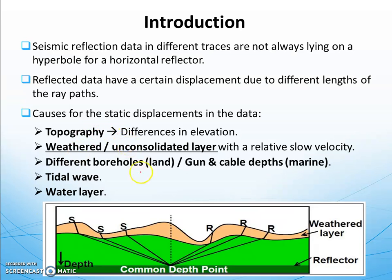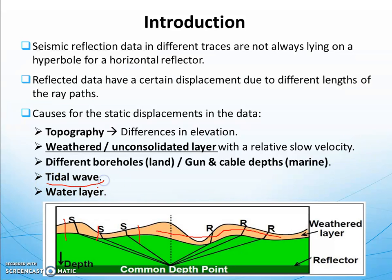The differences in elevation mean different parts of the survey have different elevations. The weathered and unconsolidated layer also plays an important role. For land acquisition, different borehole depths matter. In marine surveys, you have a fixed gun and cable depth such as five or six meters, so you can apply a straightforward correction by subtracting that value. In marine you also have tidal wave corrections requiring maritime data, and a water layer correction based on the water bottom reflection.